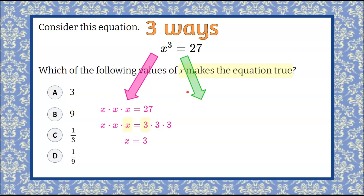Another way to look at this is to rewrite 27 as a power with an exponent of 3. We have x cubed: base of x, exponent 3. We can write 27 as 3 cubed: base of 3, exponent 3. Since 3 times 3 times 3 equals 27, written as a power that's 3 cubed. Since both sides have the same exponent of 3, the bases must be equal as well — so x equals 3.